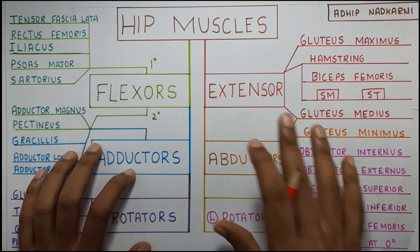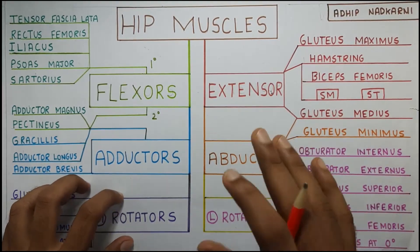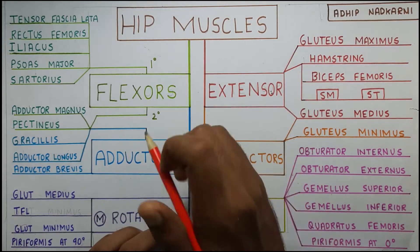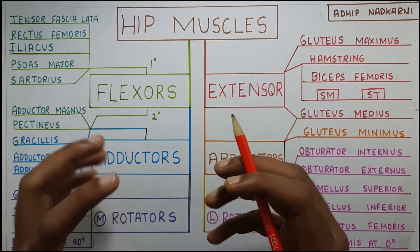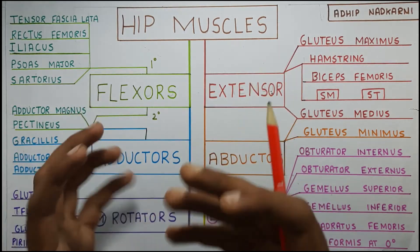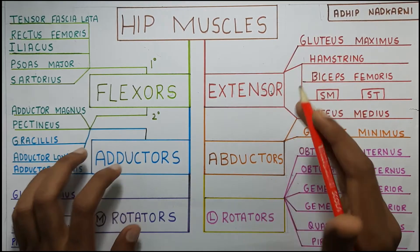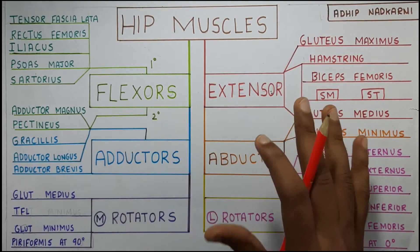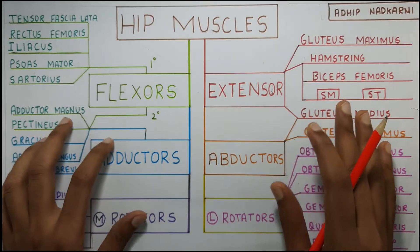Now that we know some of the properties of the hip joint muscles, let's move on to the classification. Before starting, I want to mention that I won't be talking about the exact attachment points of these muscles. I will definitely talk about where they come from so we can understand how they contract and bring about the action on Joe. Exact attachment and insertion points are something that should be dealt with in anatomy. So let's start with the classification.